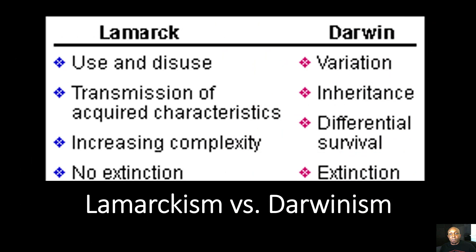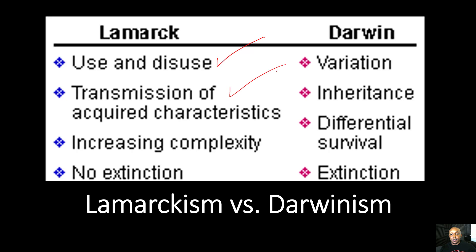Now let's do a final overview of Lamarckism versus Darwinism. First, use and disuse was Lamarck's belief that organs or body parts you use more will get better, while parts you use less will get smaller and eventually fade away. He also believed in the transmission of acquired traits — that a bodybuilder could literally pass that bodybuilding trait onto their offspring. Lamarck also believed in increasing complexity, that all organisms are working to achieve perfection. And he believed there was no such thing as extinction, because all organisms constantly push towards perfection.